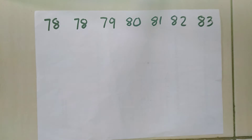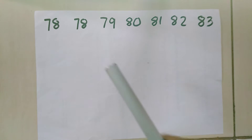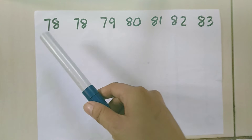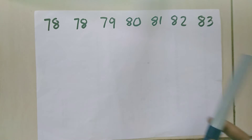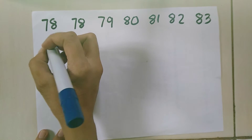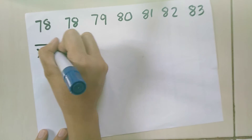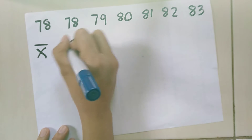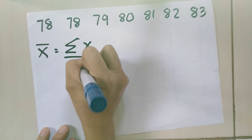Next example. We have here a set of data: 78, 78, 79, 80, 81, 82, and 83. We are going to find its mean. Again, the formula in finding the mean — this is the symbol for mean — the formula is the summation of x over n.